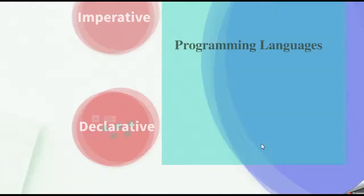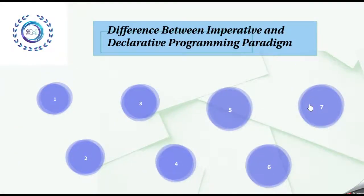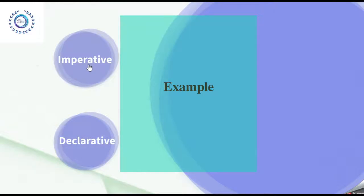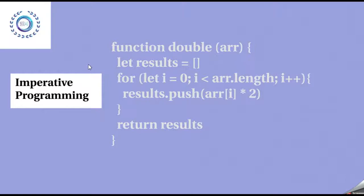Now let us see the difference between imperative and declarative programming paradigms with the help of a programming example. First we will see the example of imperative programming. As we know, imperative programming is concerned about how to do — meaning step by step instructions need to be provided. Here, suppose the goal is to double every item present in the array. To do this, we write a function called double which takes in an array of numbers and returns a new array after doubling every item in that array. This is a small example of imperative programming where we provide step by step instructions to achieve our goal.